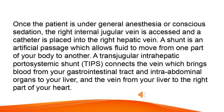Once the patient is under general anesthesia or conscious sedation, the right internal jugular vein is accessed and a catheter is placed into the right hepatic vein. A shunt is an artificial passage which allows fluid to move from one part of the body to another. A transjugular intrahepatic portosystemic shunt (TIPS) connects the vein which brings blood from the gastrointestinal tract and intra-abdominal organs to the liver, and the vein from the liver to the right part of the heart.